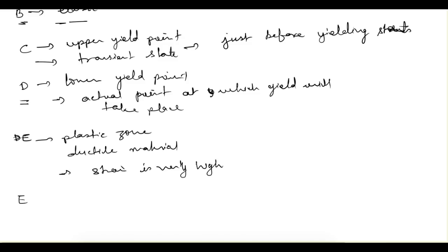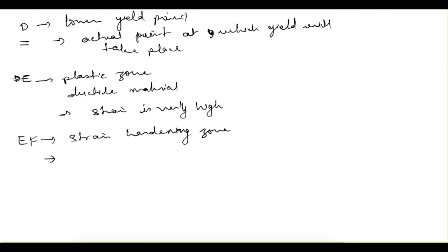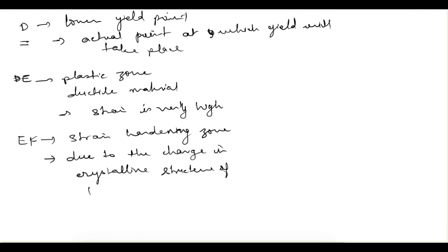After point E, we have zone EF, known as the strain hardening zone. In this zone, we have to apply further load to get more strain in the material, so the stress is again increasing. Point F corresponds to the ultimate stress of the material. Strain hardening takes place due to the change in the crystalline structure of the material.